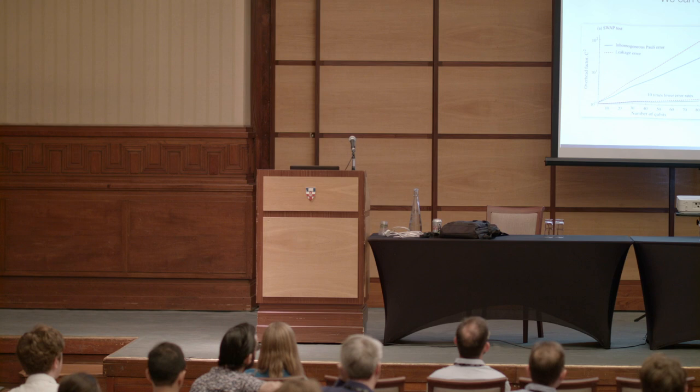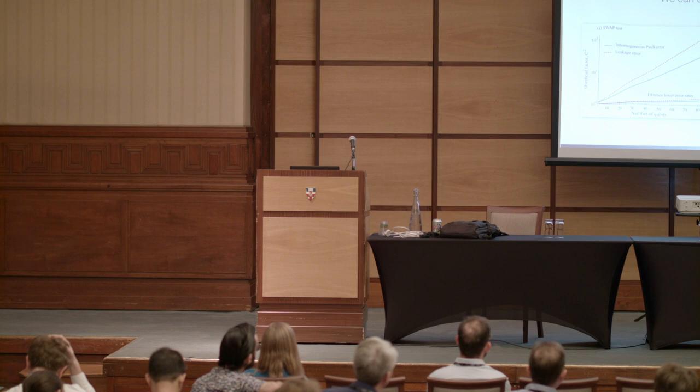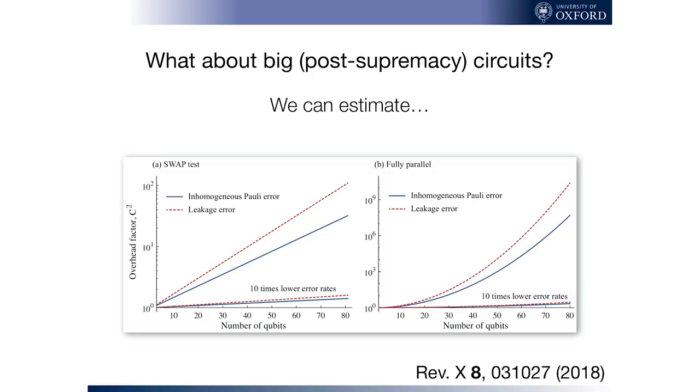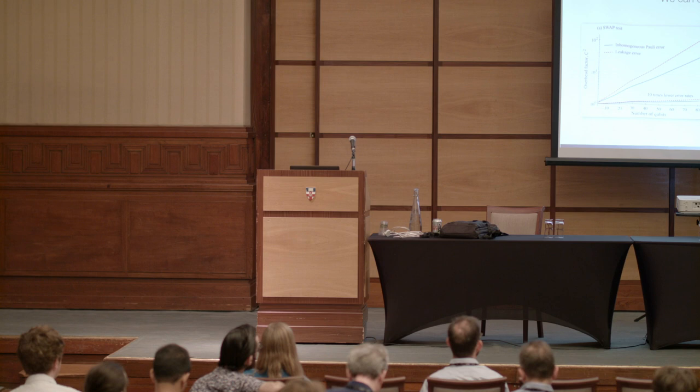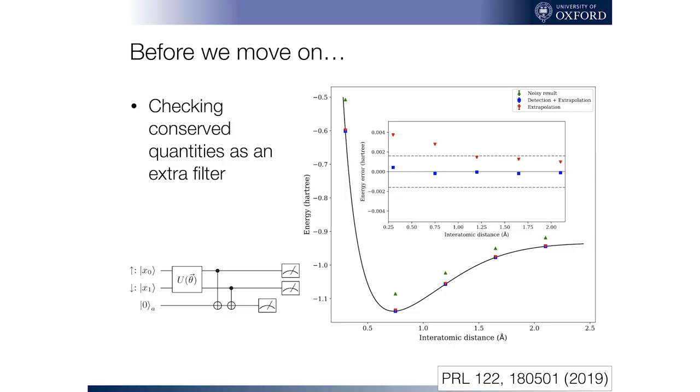Now we need an error rate, and the error rates for these two curves correspond to one part in 10 to the 3, which is basically the record set by ion trappers. And what we see is this rather depressing exponential increase. When we're out in the post-supremacy regime of about 80 qubits, we have something like 10 to the 8 as a pre-factor, even 10 to the 9. So we need to run it a billion more times to extract that out. On the other hand, if we can manage to get a 10 times lower error rate, which is not out of the question, there are ion trap groups that are now chasing that, then this is much more reasonable at this level.